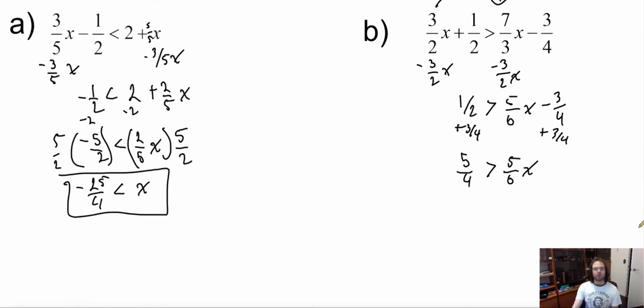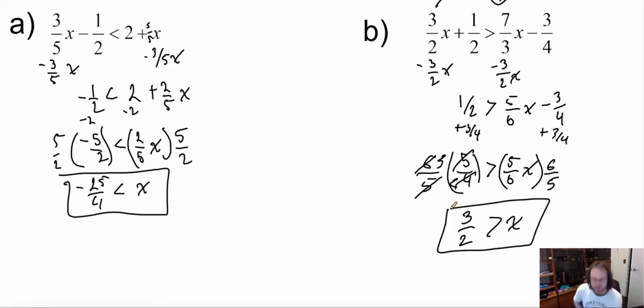Now we want to solve for x, so I'm going to multiply everything by the reciprocal of this coefficient, which is going to be 6 over 5. I look at this here, these 5s cancel out, because 5 divided by 5 is 1. This is going to be a 2, this is going to be a 3. So I'm left with 3 over 2 must be greater than x. And that is it.